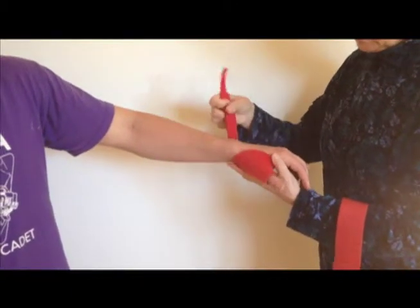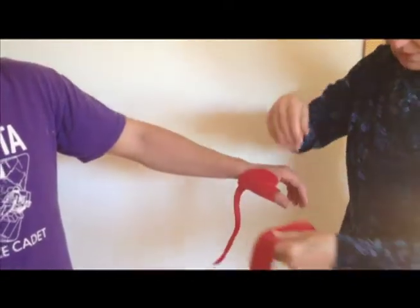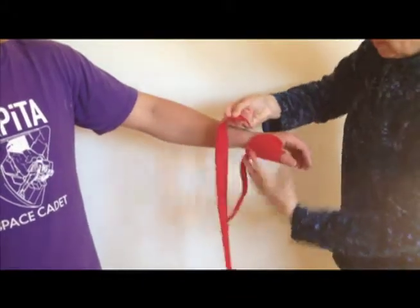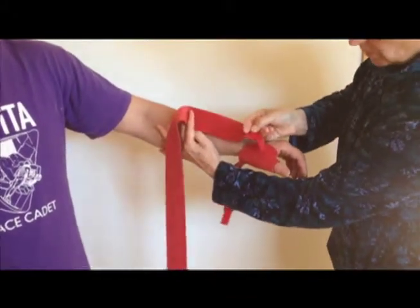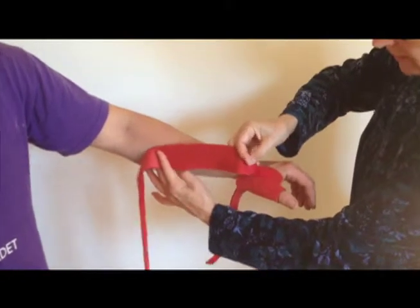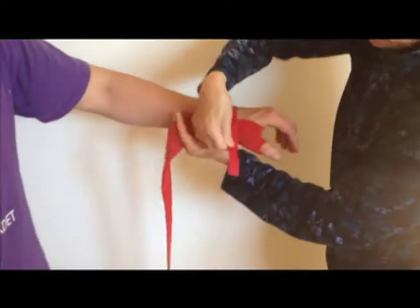I've got the thumb splint on comfortably, and I'm going to attach the narrow end of the supinator strap. Instead of going in alignment with the thumb, I'm going to follow the line of the edge of the splint and reattach the thumb splint.